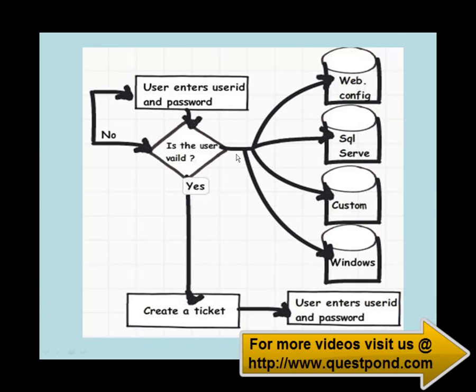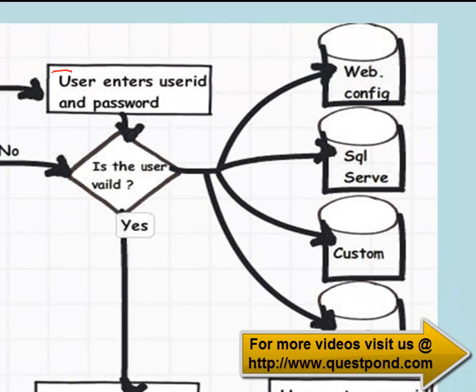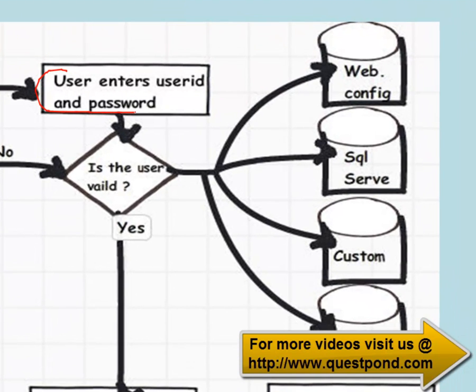Here is how Forms Authentication works. The developer creates a simple screen with the user ID and password. When the user enters these credentials, they can be validated from various sources such as SQL Server, a custom database, a web.config file, or Windows ADS.